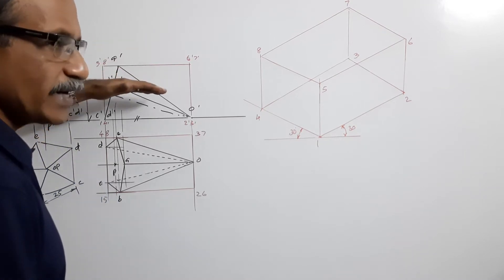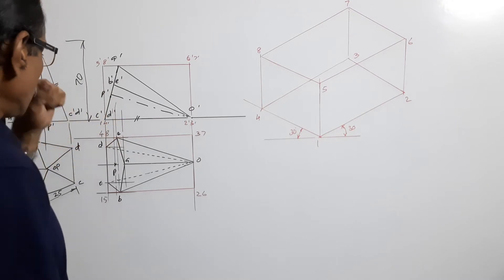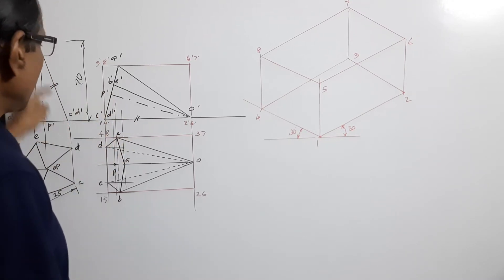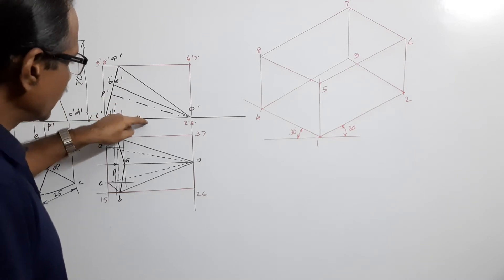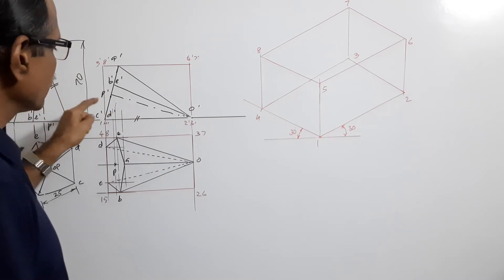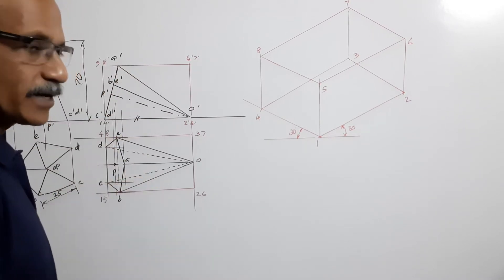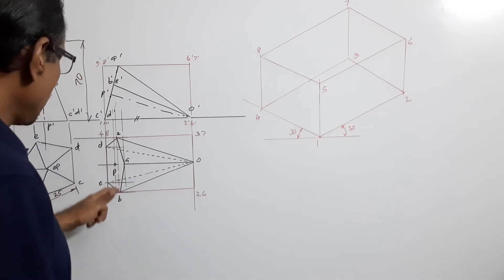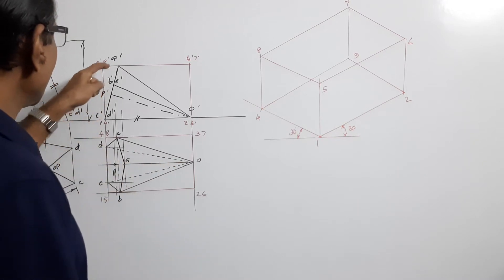Tilt the pyramid so that it lies on the triangular face. We draw this elevation with this triangular face line on the XY line, reproduce this elevation on the XY line, and project a new plan. Then name it a, b, c, d, e, o, p and the dashed counterparts.